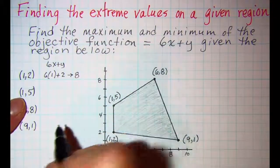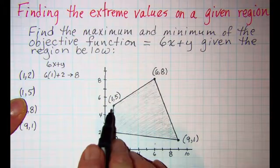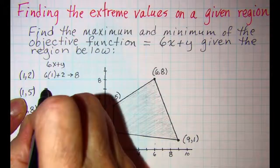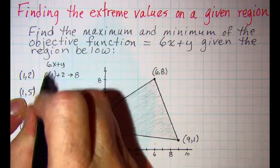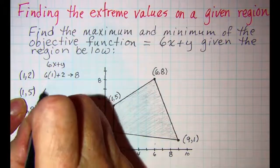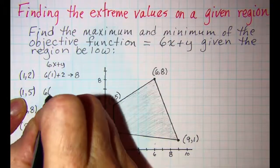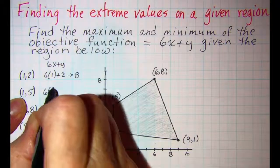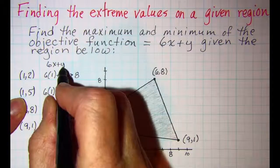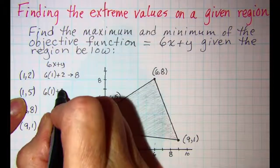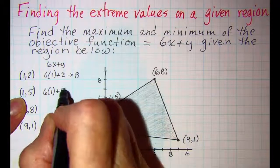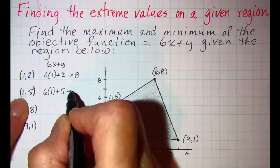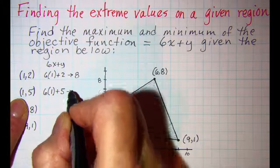For the point 1, 5 — which is right here — I have 6 times the x value which is 1, plus the y value which is 5, and I get 11.